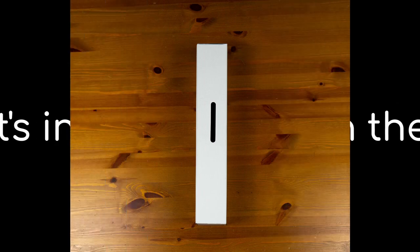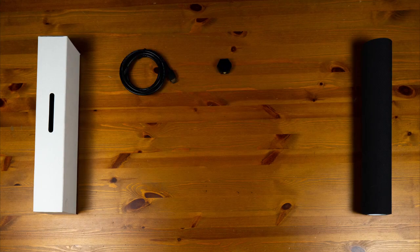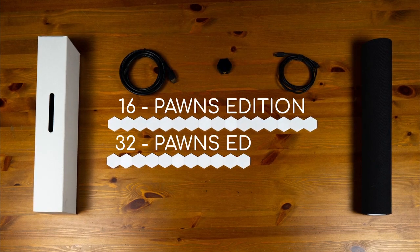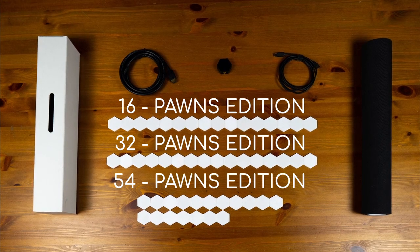In the box, you will find a high quality pad, ideal for projection, the Eidos camera, 2 meter long HDMI and USB Type-C cables, 16, 32, or 54 unique pawns depending on the tier.